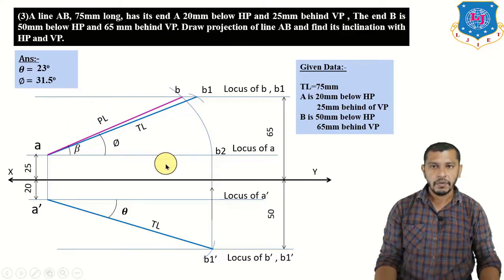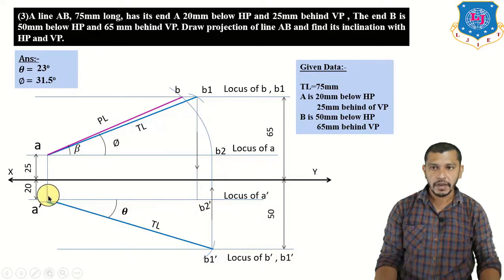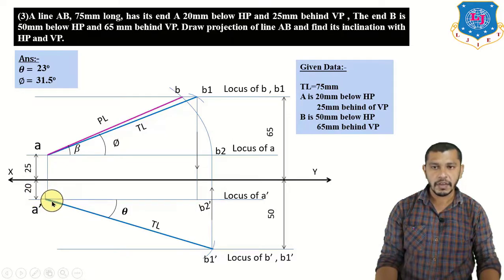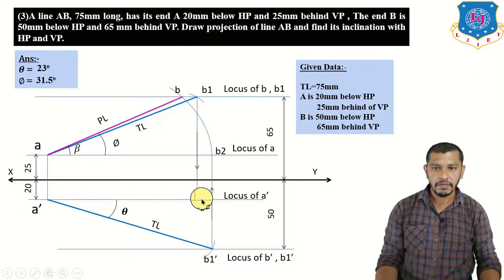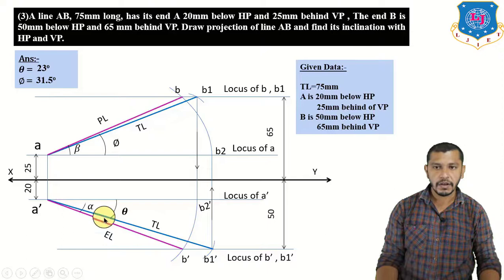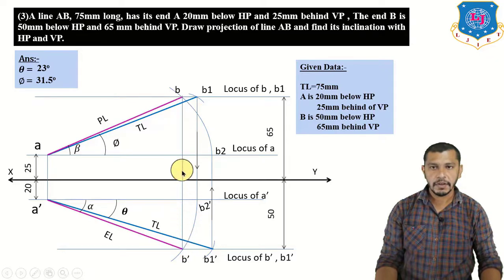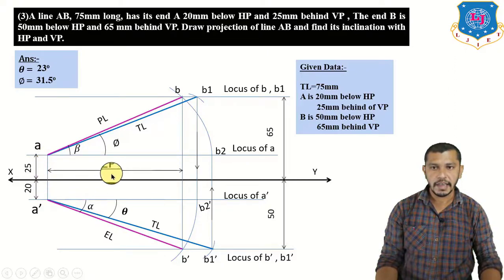To find the elevation: draw a straight line from b1 up to the locus of a-dash to get b2-dash, so a-dash b2-dash is the elevation length. Measure a-dash b2-dash as arc length, take center at a-dash, give an arc up to locus of b-dash to get b-dash. Connect b-dash to a-dash — this is the elevation length and its angle is alpha. Connect b-dash to b — this is the projector of B. The perpendicular distance between projector of A and projector of B is the end projector of the line.